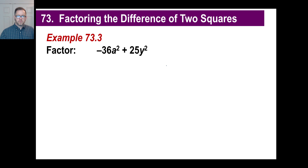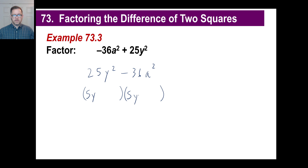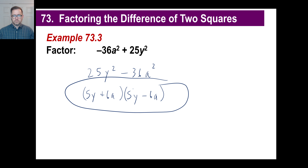Here's one in the wrong order. Let's rewrite it so it looks like a subtraction problem: 25y² minus 36a². Now we can set it up. The square root of 25 is 5, the square root of y squared is y. One gets a plus and the other a minus. The square root of 36 is 6, and the square root of a squared is a. So the answer is (5y + 6a)(5y − 6a).